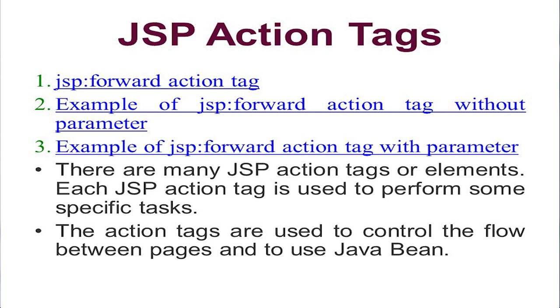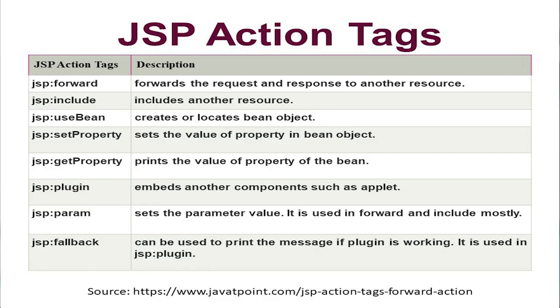There are many JSP action tags or elements. Each JSP action tag is used to perform some specific task. The action tags are used to control the flow between pages and use the JavaBean as well. The different action tags are: JSP forward, JSP include, JSP useBean, set property, get property, JSP plugin, JSP parameter, and JSP fallback.